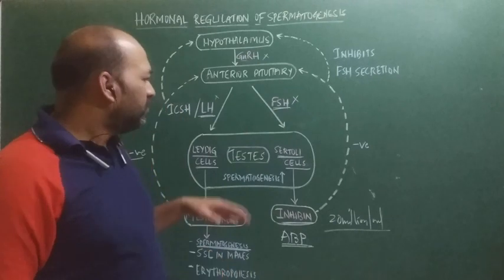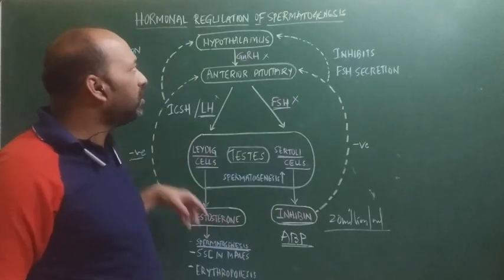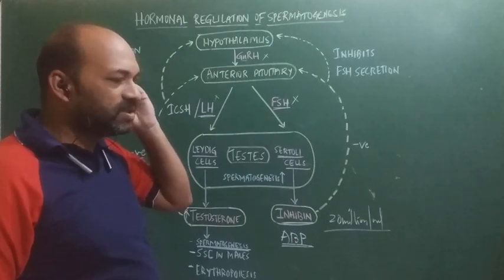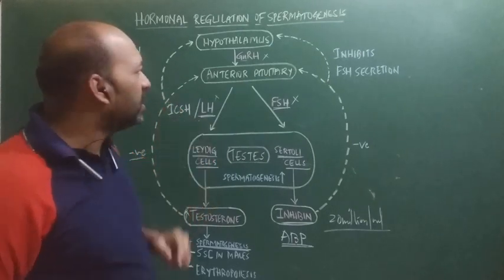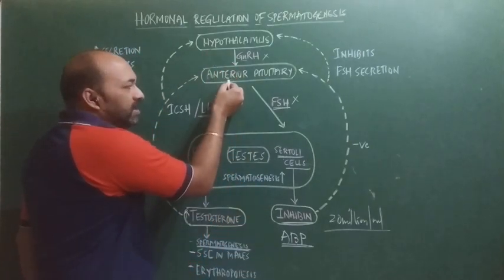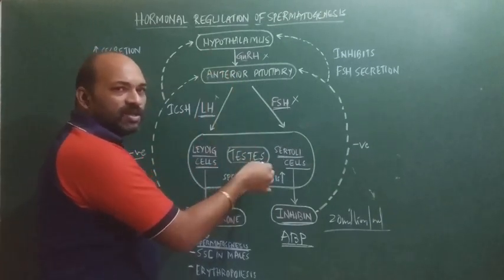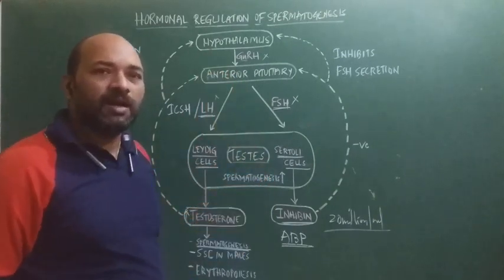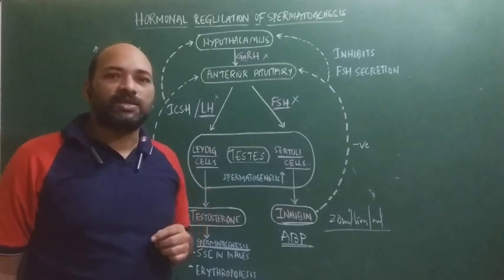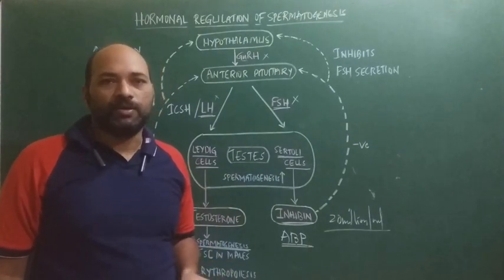The entire hormonal regulation of spermatogenesis is regulated by the hypothalamic hormone, the anterior pituitary hormones, and the gonadal hormone. This is how the entire process of spermatogenesis is regulated and controlled.